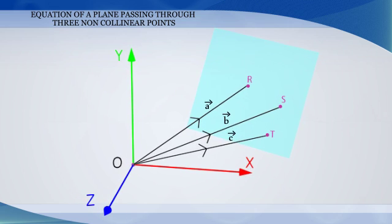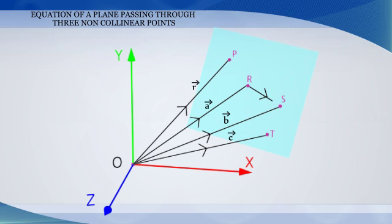Let P be any point with the position vector R in the same plane. Now, the vectors RS and RT are in the given plane.